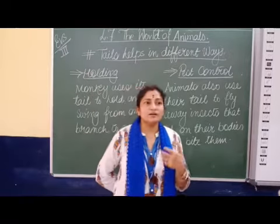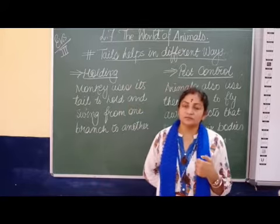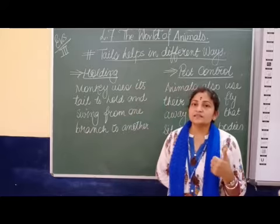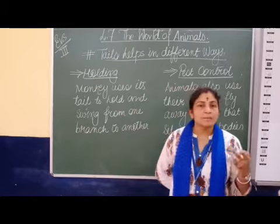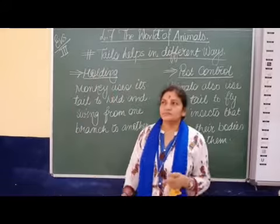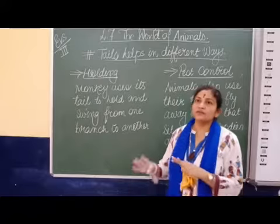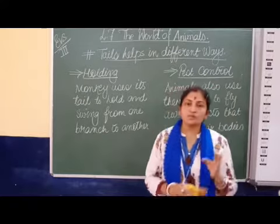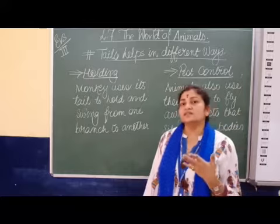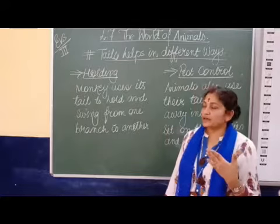So tails are useful to animals in many ways. We have categorized the uses into six parts: the first one is communication, then locomotion, balance, holding, attack, and pest control. These are the six categories — this is how animals use their tails.